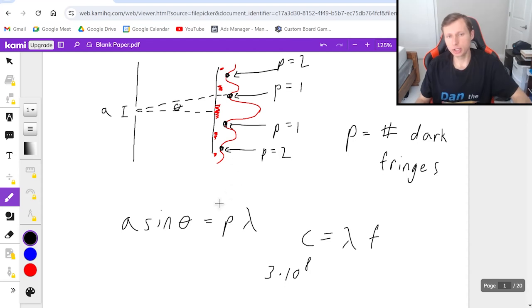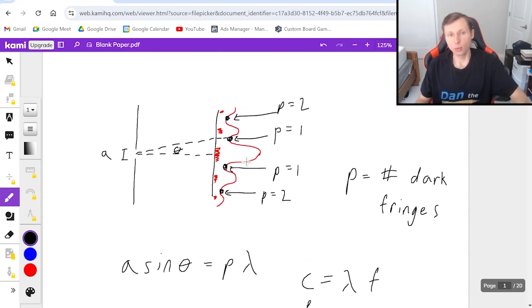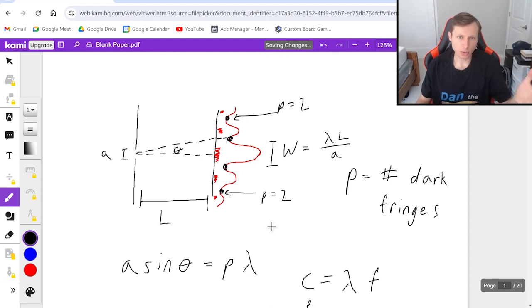The only other equation you need is for the width of the central bright fringe. That width, called w, equals lambda l over a, where l is the distance to the back wall. That's all the equations we need for single slit diffraction.